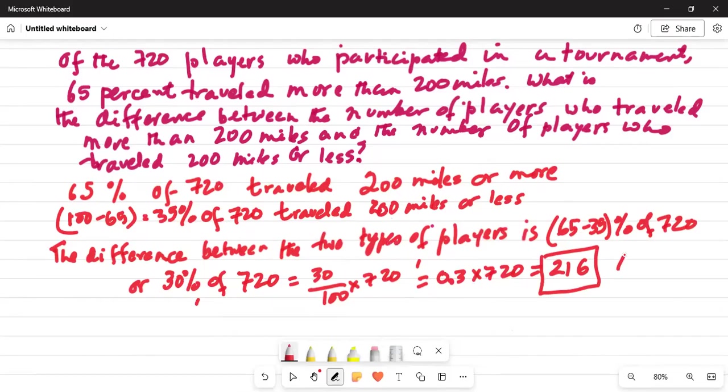So, here is a quick way of doing it. I did not spend too much time on it. I took the difference of the two percentages, which is 30%, multiplied it by the total number of players, which is 720. The final answer is 216, which is the difference in the two categories of players in terms of the distance they traveled.